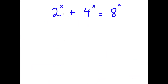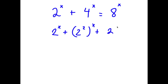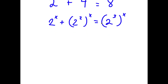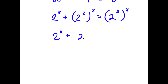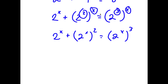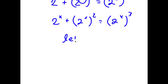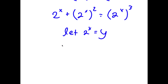In this problem, I have 2 to the power of x plus 4 to the power of x is equal to 8 to the power of x. To solve this, I'm going to first rewrite this as 2 to the power of x plus 2 squared to the power of x is equal to 2 to the power of 3 to the power of x, rewriting 4 as 2 squared and 8 as 2 cubed. Now I rewrite this as 2 to the power of x plus 2 to the power of x squared equals 2 to the power of x cubed, switching the places of the exponents. I'm going to let 2 to the power of x equal the variable y, so now I have y plus y squared is equal to y cubed.